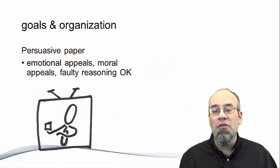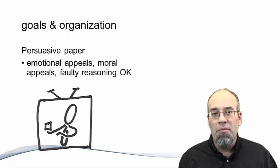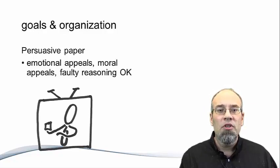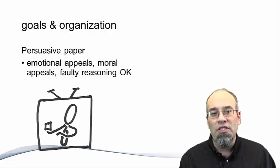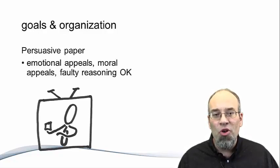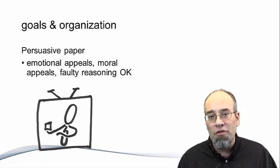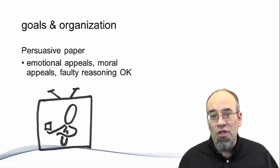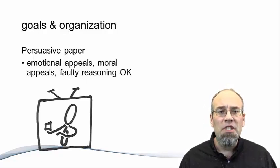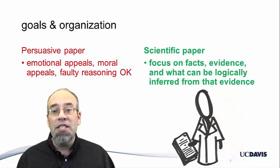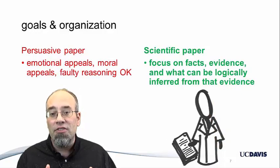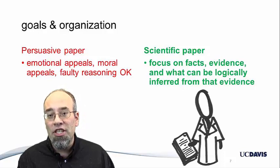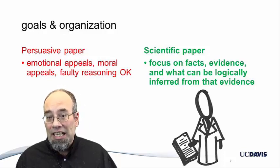The persuasive paper may use a variety of appeals to achieve its outcome — emotional appeals, moral appeals, or even fallacious appeals or faulty reasoning. Any of these is totally appropriate in a persuasive message because the goal is to change attitudes, beliefs, and behaviors. It's not particularly concerned with truth; it's only interested in change. Such approaches are generally not acceptable in a scientific paper. The scientific paper is interested in facts, in evidence, and what can logically and reasonably be inferred from that evidence. And that's all.